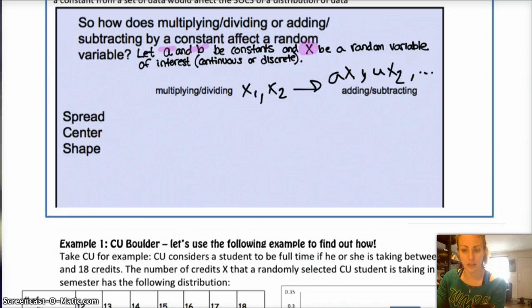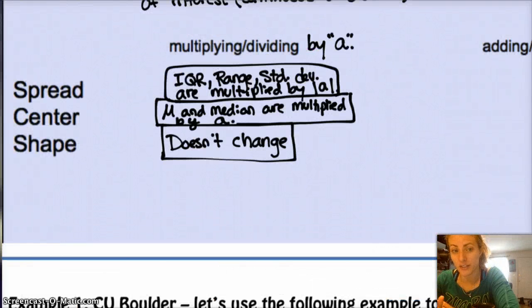Then, the shape of the distribution doesn't change at all. Right. If you noticed earlier, the shape of the actual distribution didn't change. But, the spread is multiplied by the constant, and so is the center. Regardless of whether it's the mean or the median, IQR, range, or standard deviation. Regardless of whether a is positive or negative. Right. Your spread is multiplied by the absolute value of it. Okay.